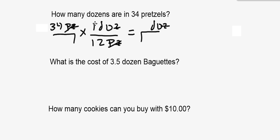Mathematically, we take 34 and divide by 12, and our answer comes out to be 2.8 dozen. Most things aren't bought in decimals of dozens, but I want you to be comfortable handling decimals because with the mole we're going to need to do that.